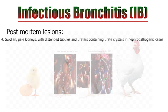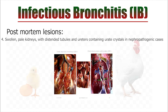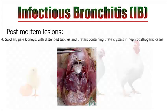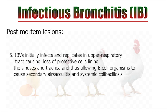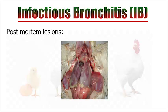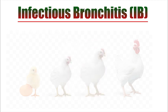There will be swollen kidneys with distended ureters and tubules with urates, resulting in visceral gout in the nephropathogenic form of IB viruses. When the disease is complicated with E. coli, there will be severe colisepticemia and the mortality can be as high as 30 to 40 percent.